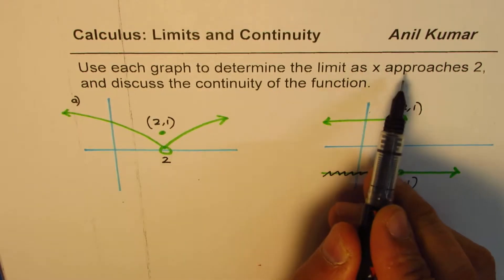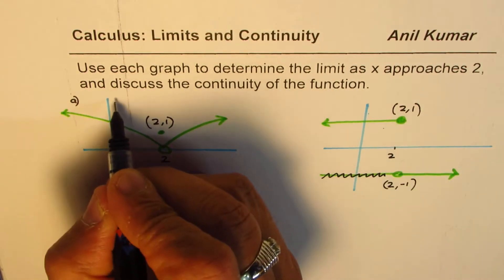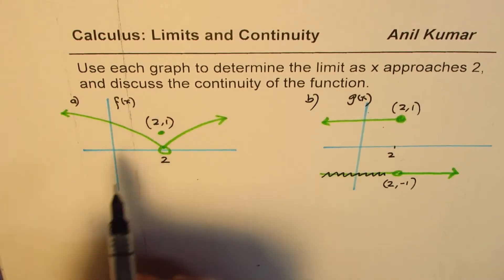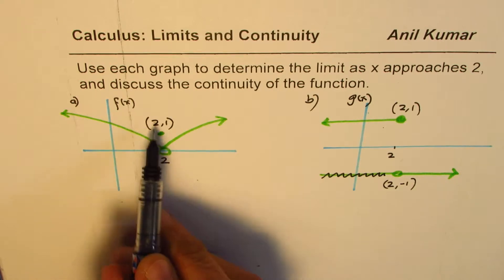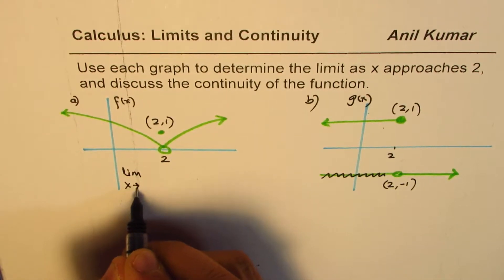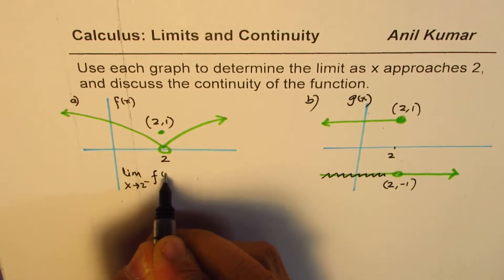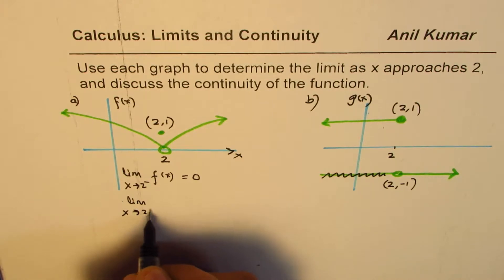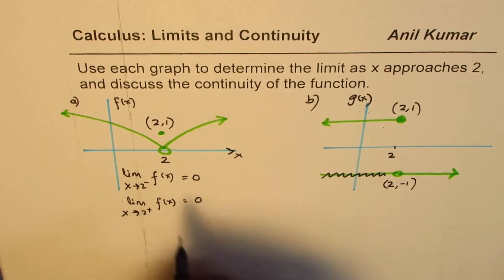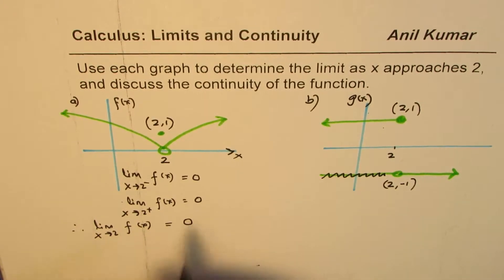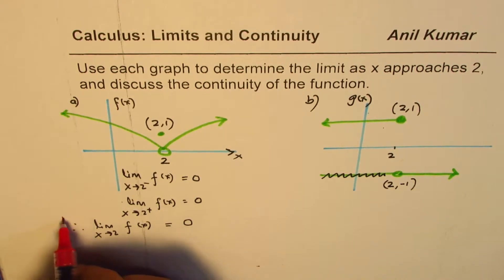Now let's find the limit of these functions as x approaches 2. Let's call this function f(x) and the other function g(x). For f(x), the limit as x approaches 2 from the left side is equal to 0 — it is on the x-axis. The limit as x approaches 2 from the right side is also equal to 0. Since these two limits are equal, the limit as x approaches 2 for f(x) is equal to 0. The limit exists and it is equal to 0.